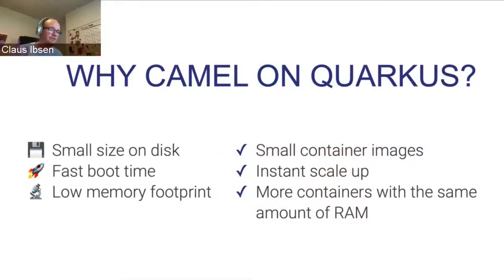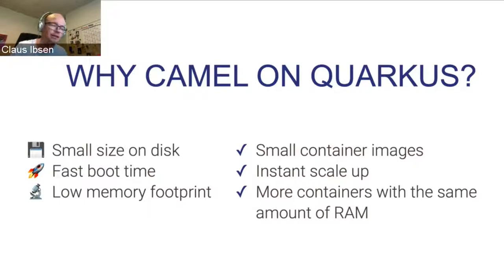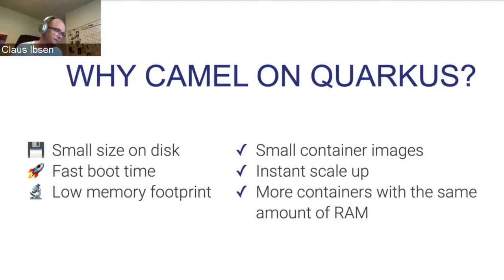So why Camel on Quarkus? You get very small applications because Quarkus can do dead code elimination, optimize and remove things you don't need, and build a fat JAR that only has what you need — and you can compile that to native as well. That gives a very fast boot time, reduces the memory footprint, and it's really about scaling — especially in cloud workloads where you need to be elastic and scale when there's demand. Now we pay per usage in the cloud, so if we can build architectures that scale up and down based on load, that's important.